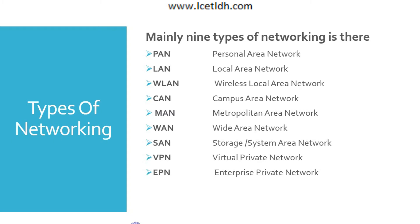Next we have the Storage Area Network (SAN) and System Area Network. A SAN is a dedicated high-speed network that connects shared pools of storage devices to several servers. These networks don't rely on LAN or WAN; instead, they move storage resources into their own high-performance network. SANs can be accessed in the same fashion as a drive attached to a server, and types include converged, virtual, and unified SANs. The System Area Network is a relatively new term used to describe a local network designed to provide high-speed connection in server-to-server applications, where computers operate as a single system at very high speeds.